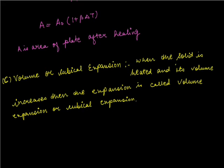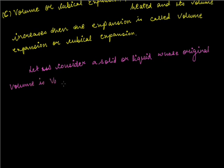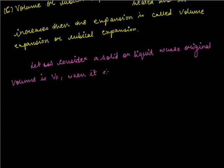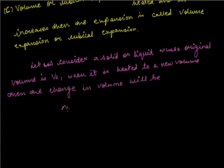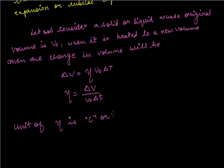Let us consider a solid or liquid whose original volume is V0. When it is heated to a new volume, the change in volume will be: delta V equals gamma times V0 times delta T. Hence we can write gamma equals delta V upon V0 delta T. The unit of gamma is centigrade inverse or Kelvin inverse.